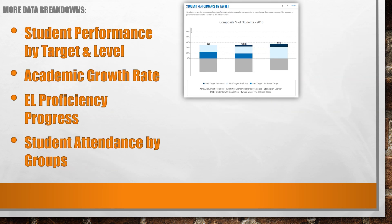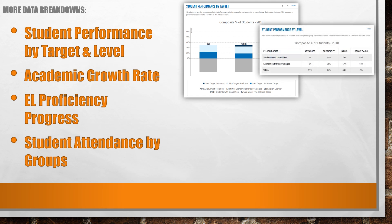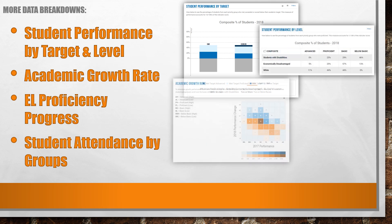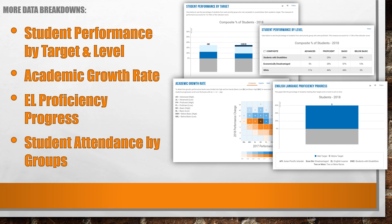Results of indicators can also be analyzed by student performance, by target, and by proficiency level. Results can be viewed as either graphs or tables and can be filtered in many ways. The academic growth rate shows a matrix of gains and losses. The EL proficiency progress represents the percentage of EL students meeting their yearly growth targets. The student attendance by groups shows attendance rates.